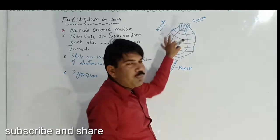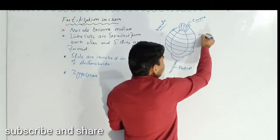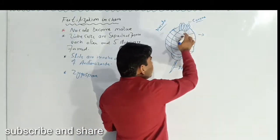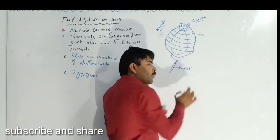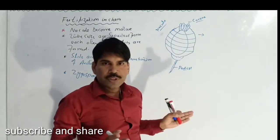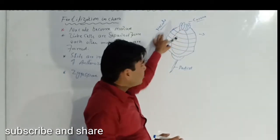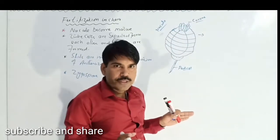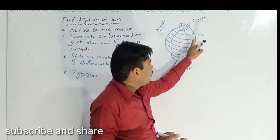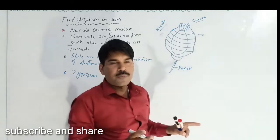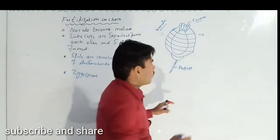When it becomes mature, these tube cells are separated from each other. When these tube cells are separated from each other, they form slits or openings, and these openings are known as slits.